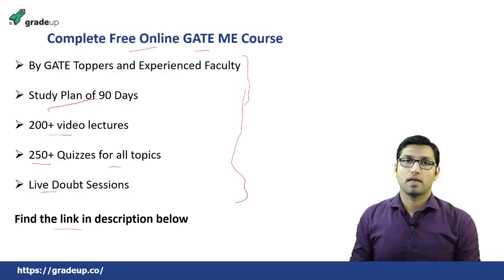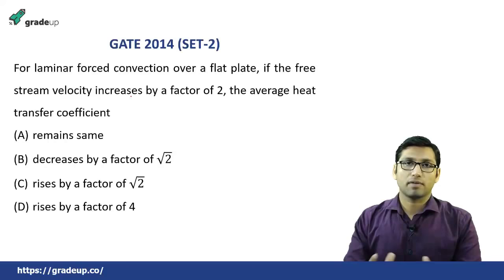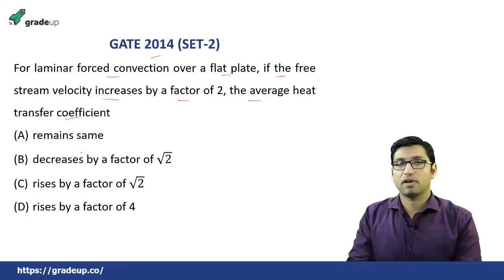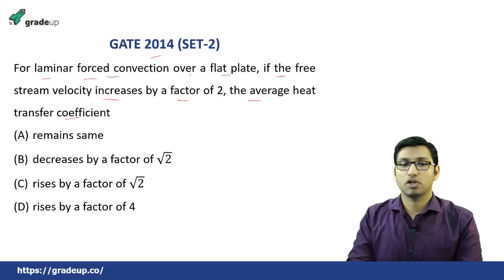So let's start with the first question from GATE 2014 Set 2. This question states that for laminar forced convection over a flat plate, if the free stream velocity increases by a factor of 2, you have to determine the effect on the average heat transfer coefficient. We know for laminar forced convection over a flat plate, the Nusselt number equals 0.664 times Reynolds number to the power half and Prandtl number to the power 1/3.